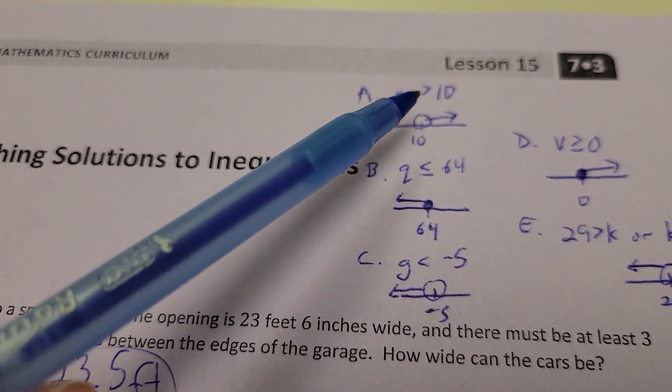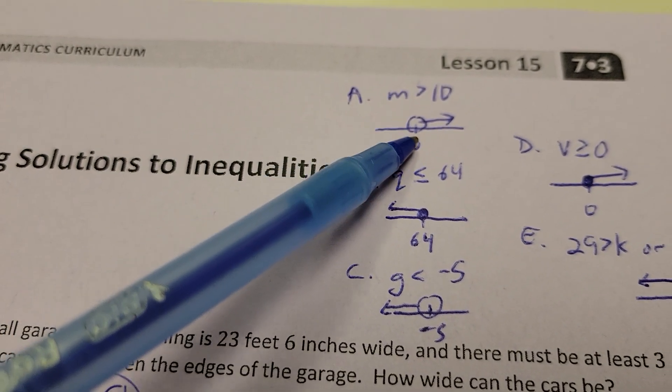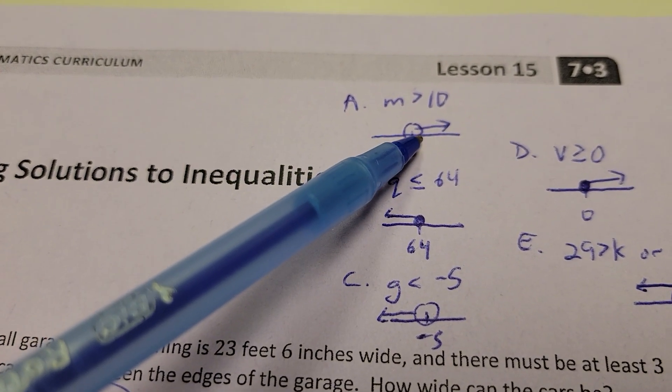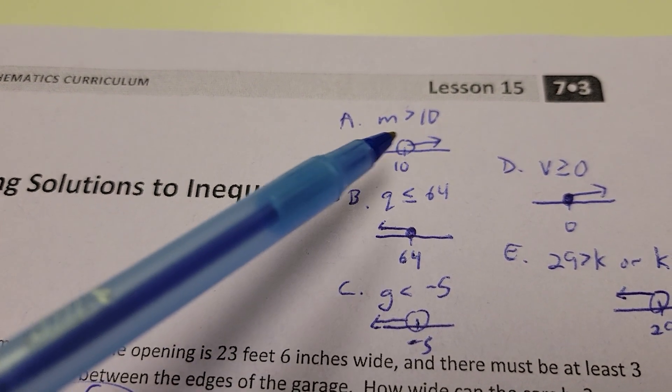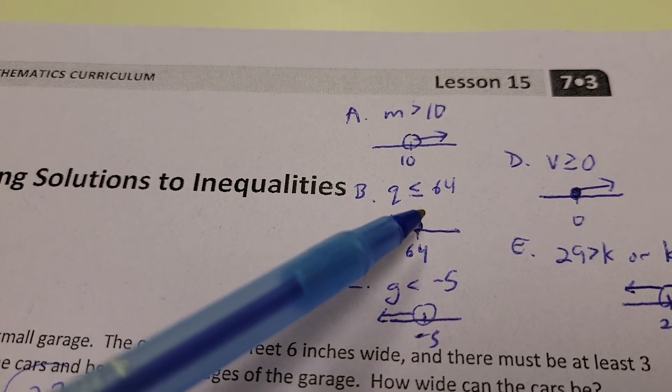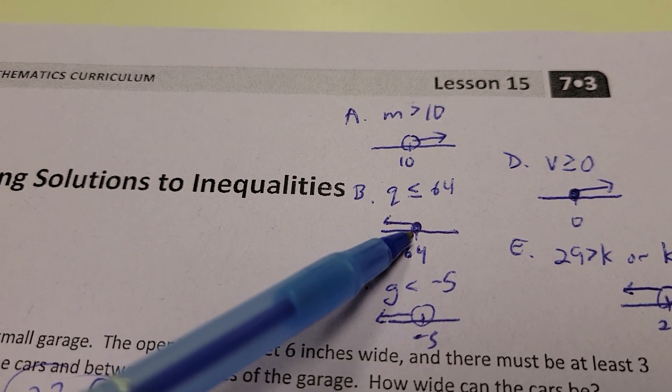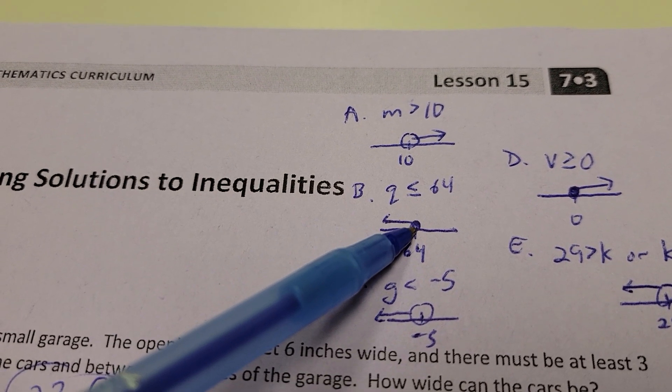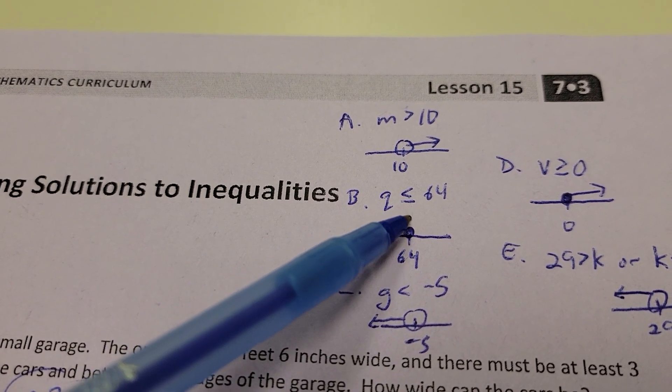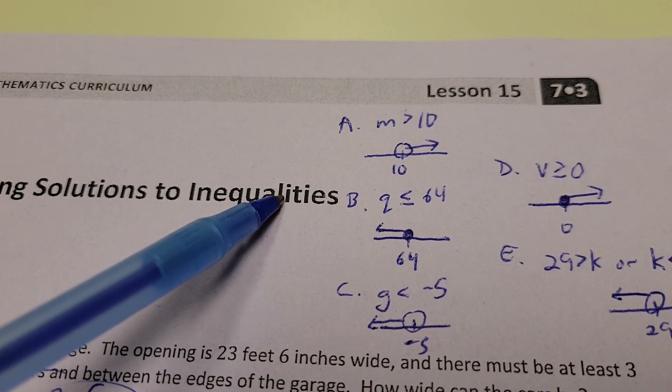If you're trying to graph M as greater than 10, it does not include 10 itself, so you have an empty circle on the 10, and you move to the right because it's bigger than 10. Q is less than or equal to 64. You actually darken in the circle here, you fill it in, because it includes 64, that's what the equals to means, and anything less than that, so your arrow's moving to the left.